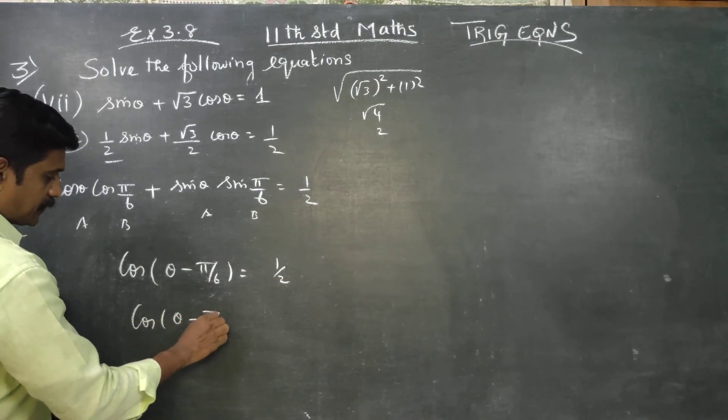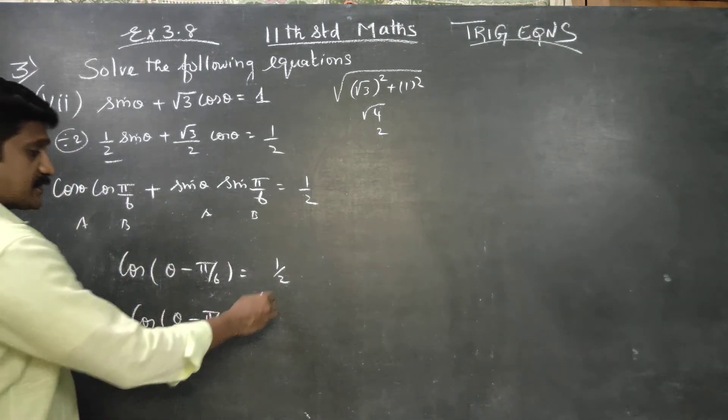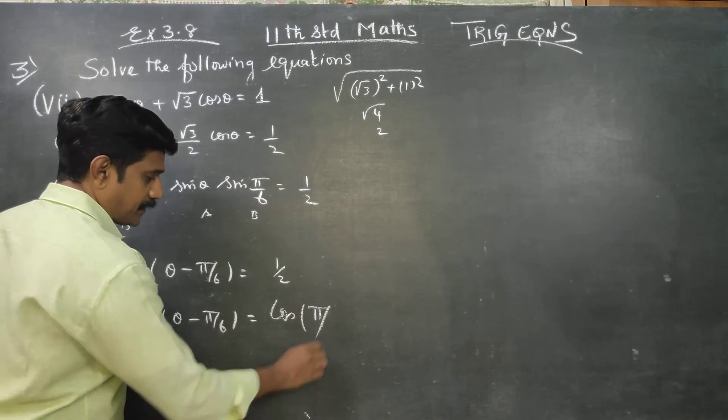Cos theta minus pi by 6. Cos of pi by 3.